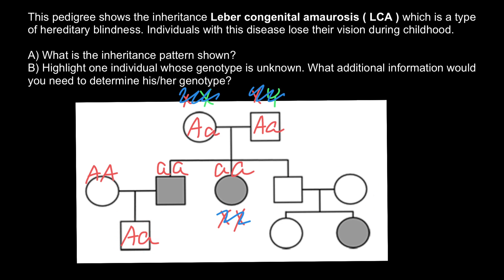Now let's consider this couple. They have an affected child whose genotype must be small a, small a. That means this person must be heterozygous, and his wife also must be heterozygous. In this case, the affected child can get one defective allele from the father's side and one defective allele from the mother's side.